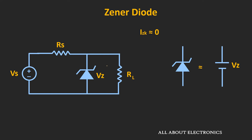But actually, this Zener diode requires some finite amount of current — in other words, the Zener knee current is non-zero. And during the breakdown region of operation, the Zener diode also has some finite Zener resistance. So, considering this non-ideal Zener diode, let us solve some problems based on this Zener regulator circuit.